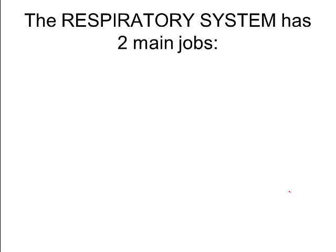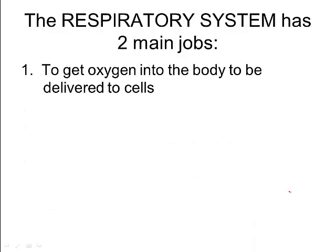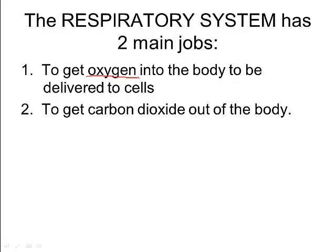Your respiratory system has two major jobs. One is to get oxygen into the body. Our cells need oxygen in order to do cellular respiration — with oxygen they can make 36 ATP, but without it they can only make two from one glucose. Also, during cellular respiration we make carbon dioxide as a waste product, and that has to be removed. If too much carbon dioxide builds up in your blood, it makes the blood acidic and can lead to cells being destroyed.